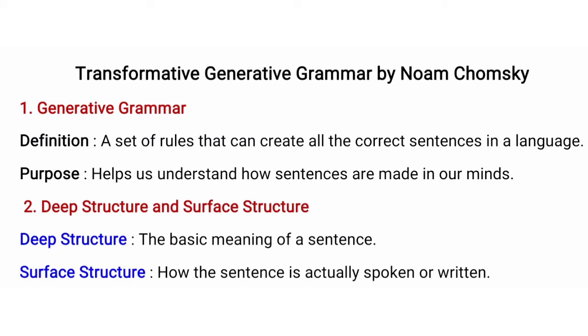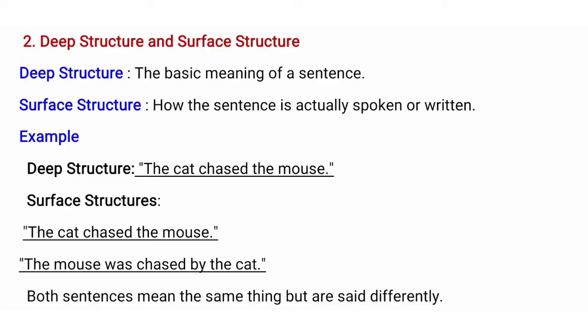Moving toward deep structure and surface structure: deep structure means the core or basic meaning of a sentence, while surface structure is the opposite — it means the upper meaning of the sentence, how it is actually spoken or written. For example, the deep structure is 'the cat chased the mouse' and the surface structure is 'the mouse was chased by the cat.' Both have the same meaning but are expressed differently — one is active and the other is passive.